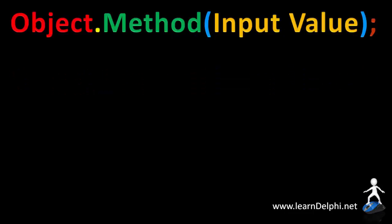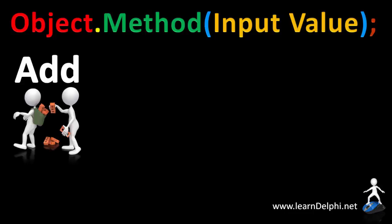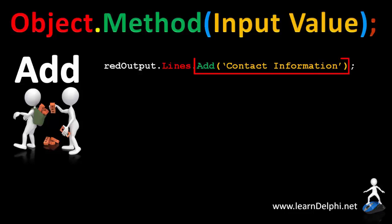Now, with all this in mind, let's also look at some other handy methods in Delphi. You learnt about the add method now. Here's the statement again to add the phrase 'contact information' to the lines property of a rich edit called red output.